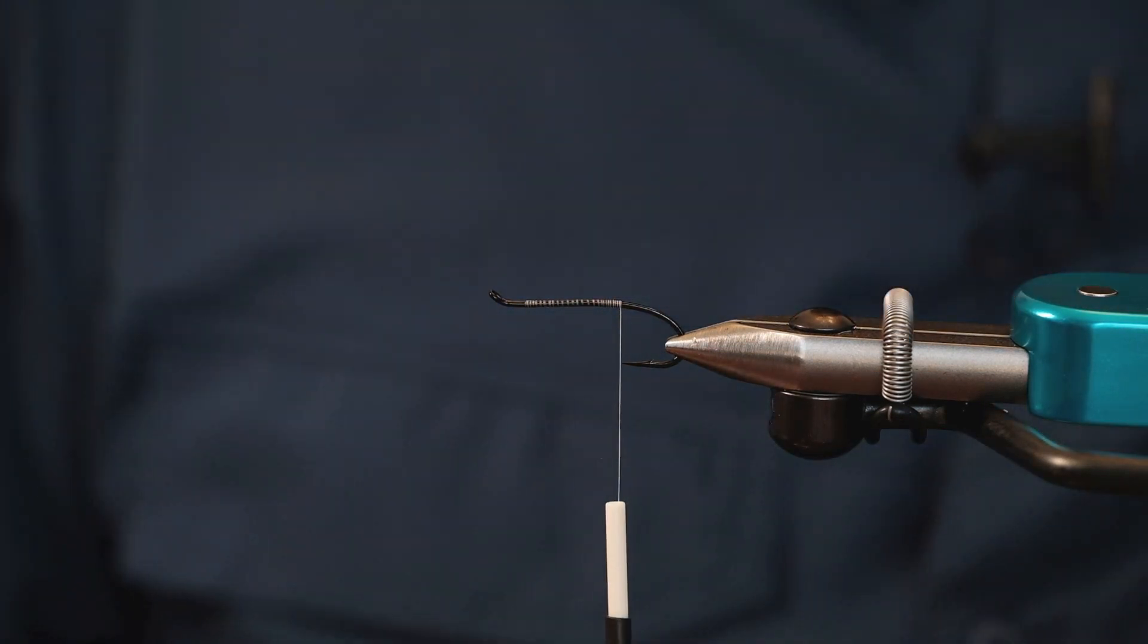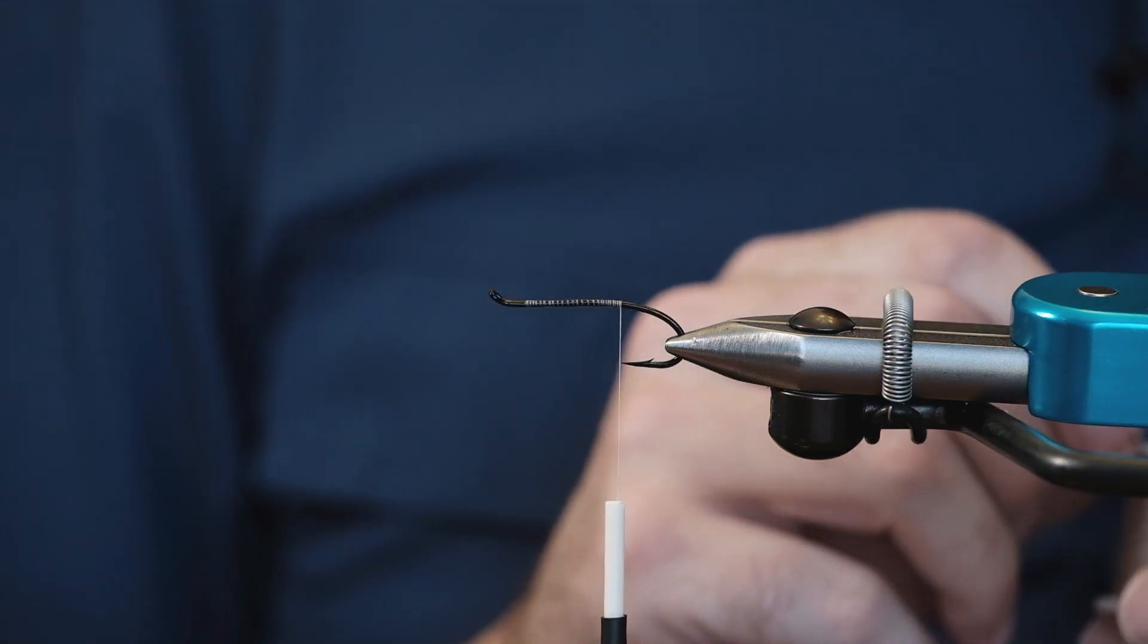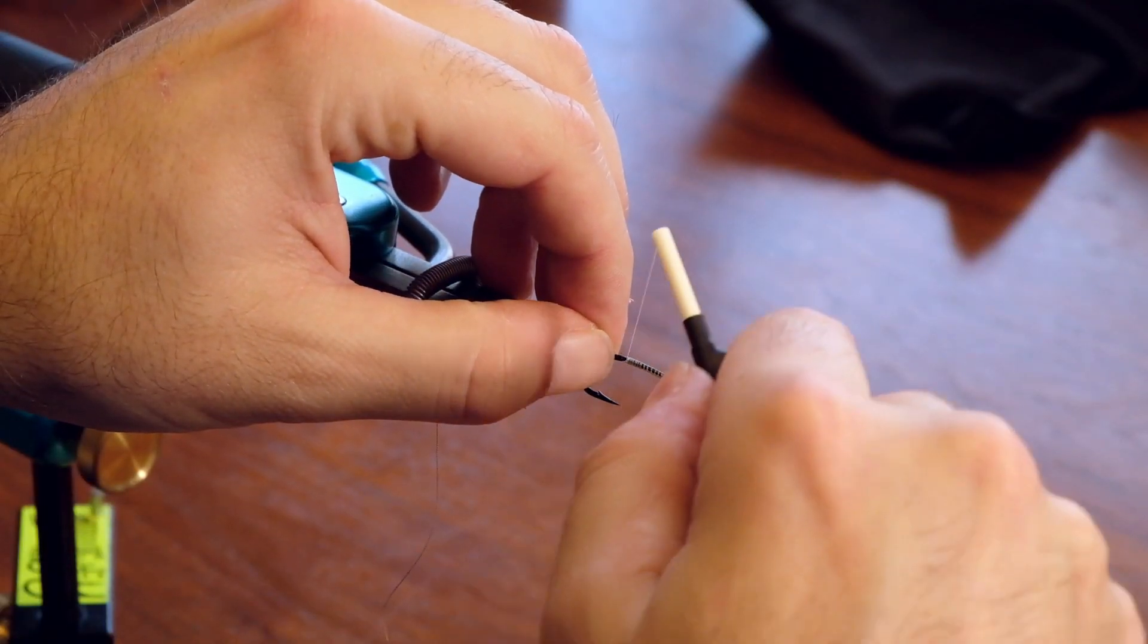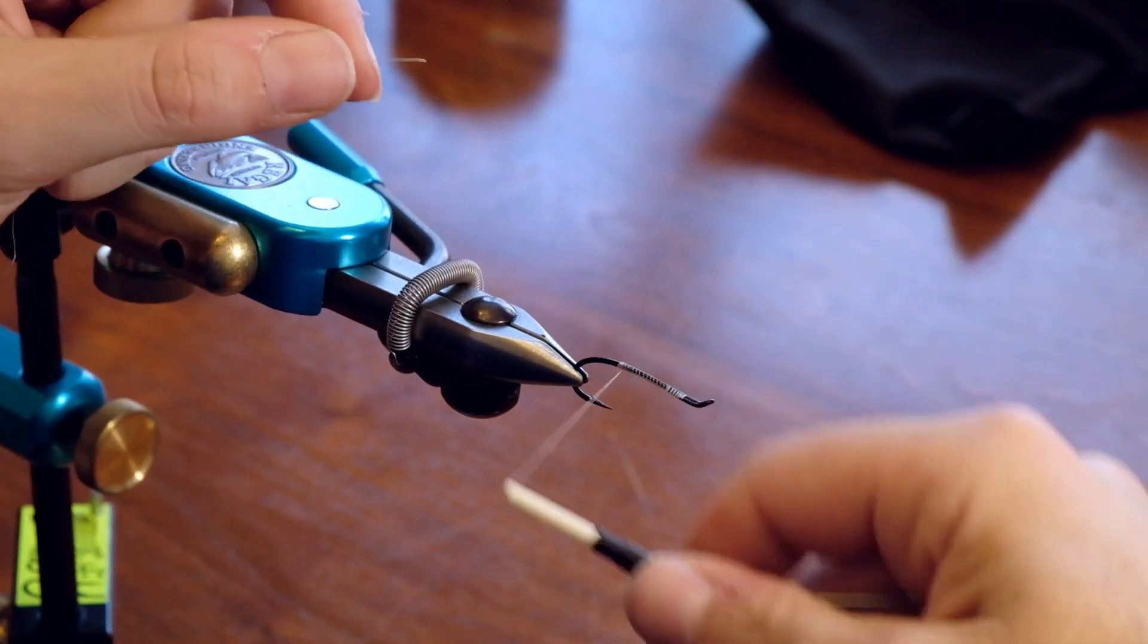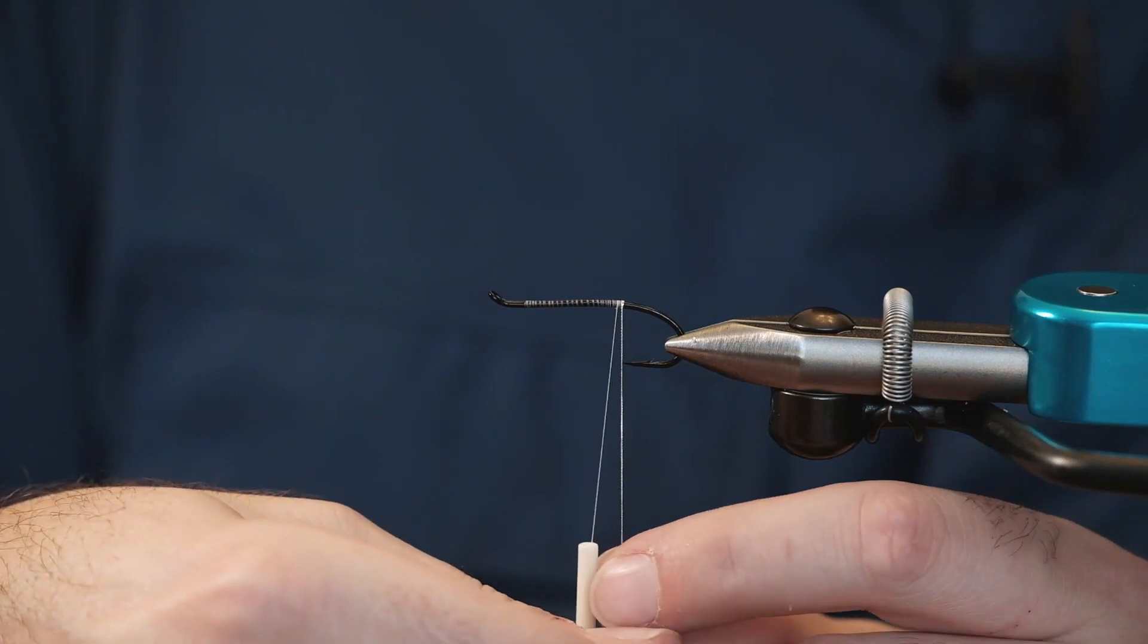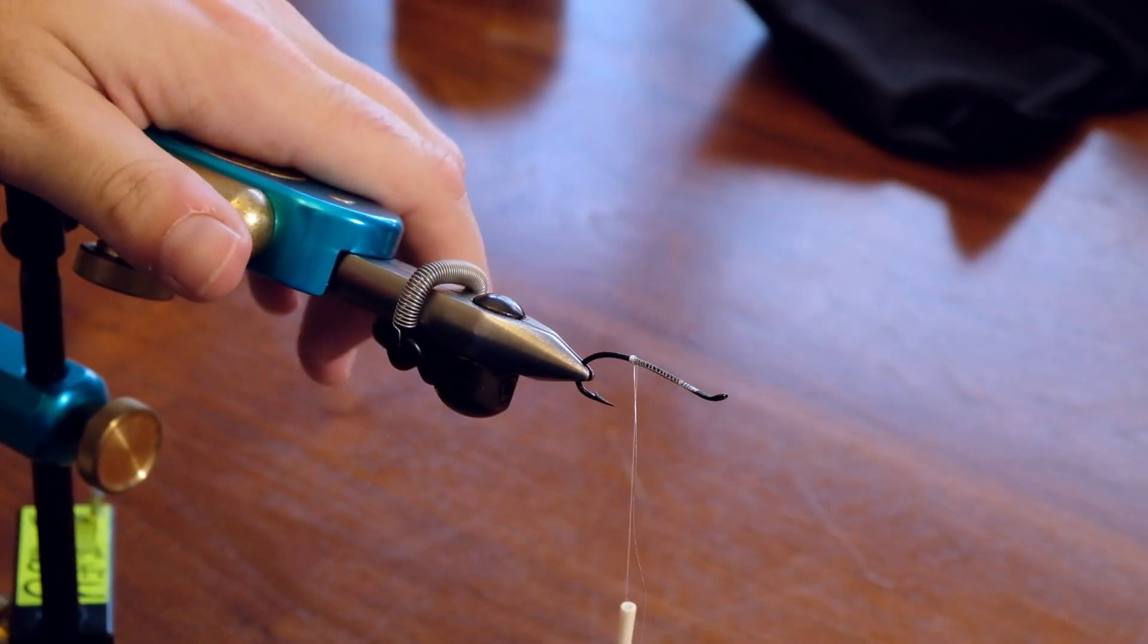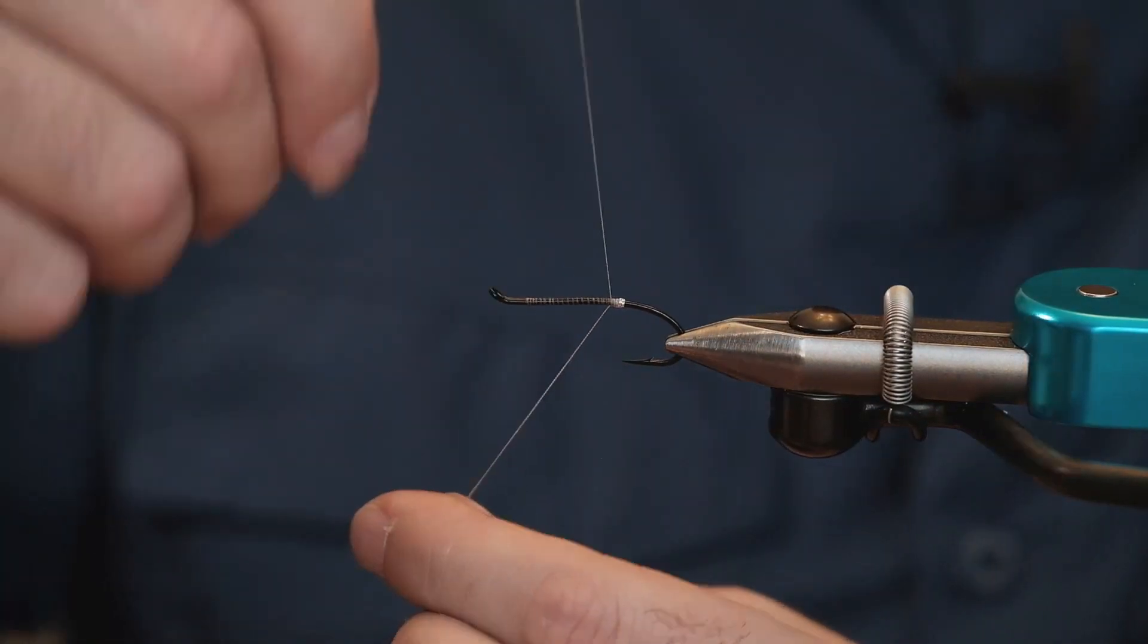First up we're going to tie in some extra small Bevis French tinsel. Once I lock that in, I bring the thread up a little bit to where I want to stop. When we're wrapping we try to keep an eye on keeping our wraps flush and make sure there's no spaces in between. We can wrap that up to where we're going to tie in our butt section.